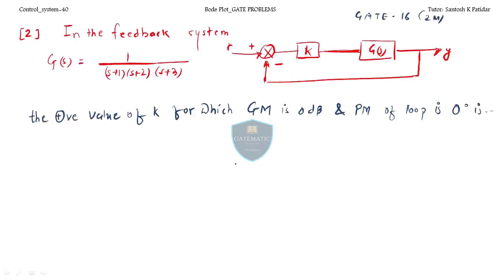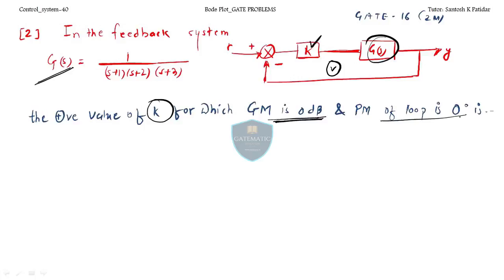Let us come to the second question. In this feedback system, G(s) is given as 1 divided by (s+1)(s+2)(s+3), and the question asks for the positive value of K for which the gain margin is 0 dB and phase margin is 0 degrees. These conditions correspond to a marginally stable system.